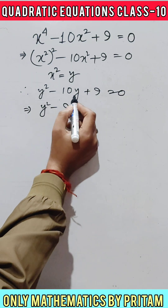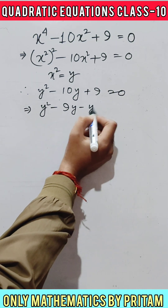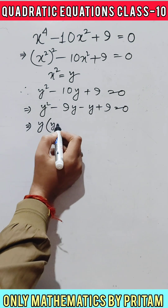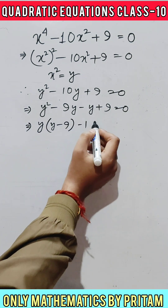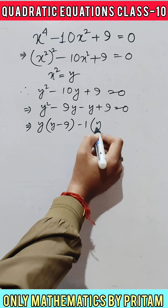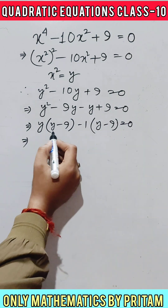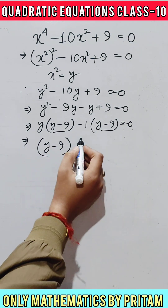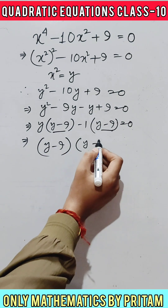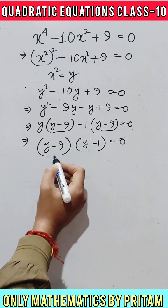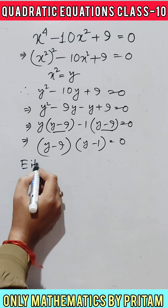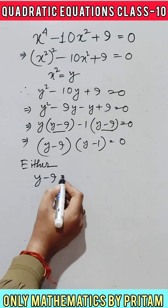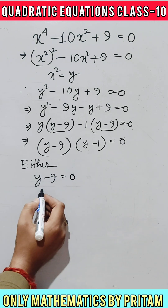Now this minus 10y can be written as minus 9y minus y. Take y as common: y times (y minus 9), and minus 1 is common: minus 1 times (y minus 9). The common part is (y minus 9), and the remaining factor is (y minus 1), equal to 0.